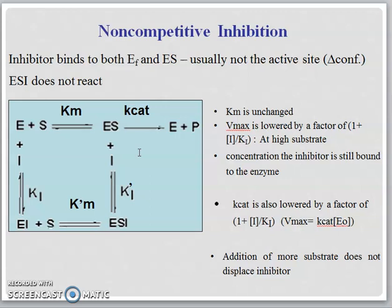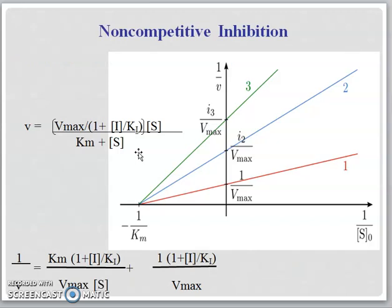By addition of more substrate, it will not displace the inhibitor. This is the pattern of the graph for non-competitive inhibition: as the inhibitor increases, the Vmax is lower, while the Km value remains similar. This is the common type of non-competitive inhibition. You can find the values of Vmax and Km from the graph, at the interception and from the slope.